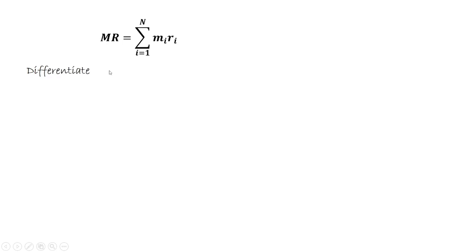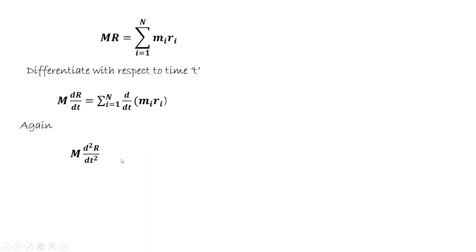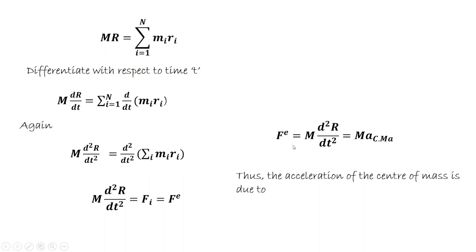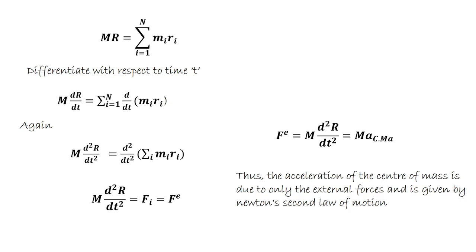We need to differentiate the center of mass equation with respect to time two times. Differentiating once gives the velocity of the center of mass; differentiating again gives the final result: external force equals M times d squared R divided by dt squared, which equals M times A, where A is the acceleration of the center of mass. This indicates that the acceleration of the center of mass is due only to the external forces and is given by Newton's second law of motion — a very fundamental concept in classical mechanics.